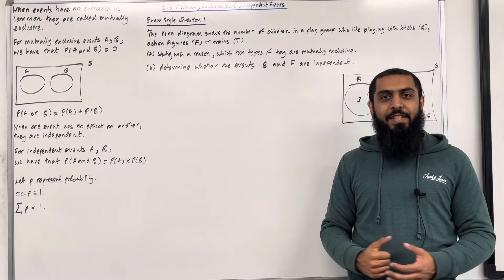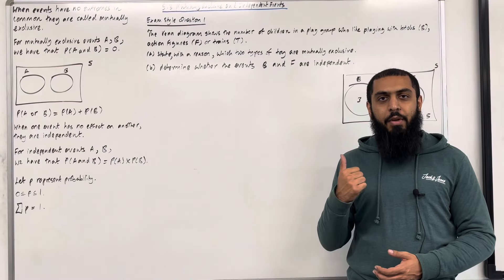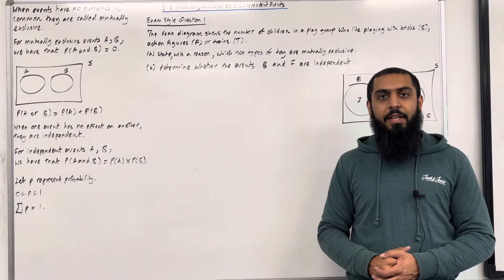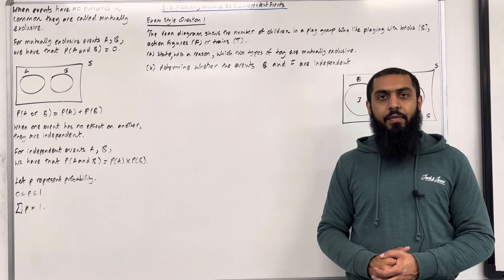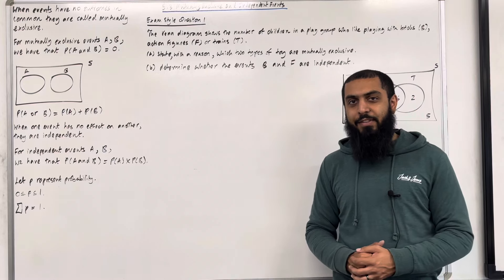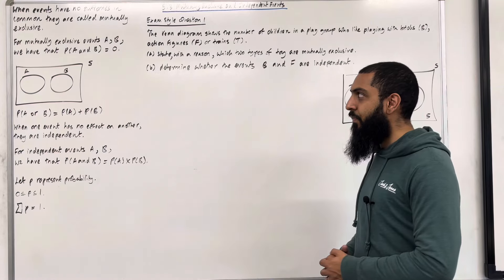Welcome back. In this YouTube video, I'll be looking at 5.3 Mutually Exclusive and Independent Events. 5.3 represents Chapter 5, Section 3 of the Pearson A Level Maths Applied Year 1 textbook. Let's have a look at the key facts of this section.